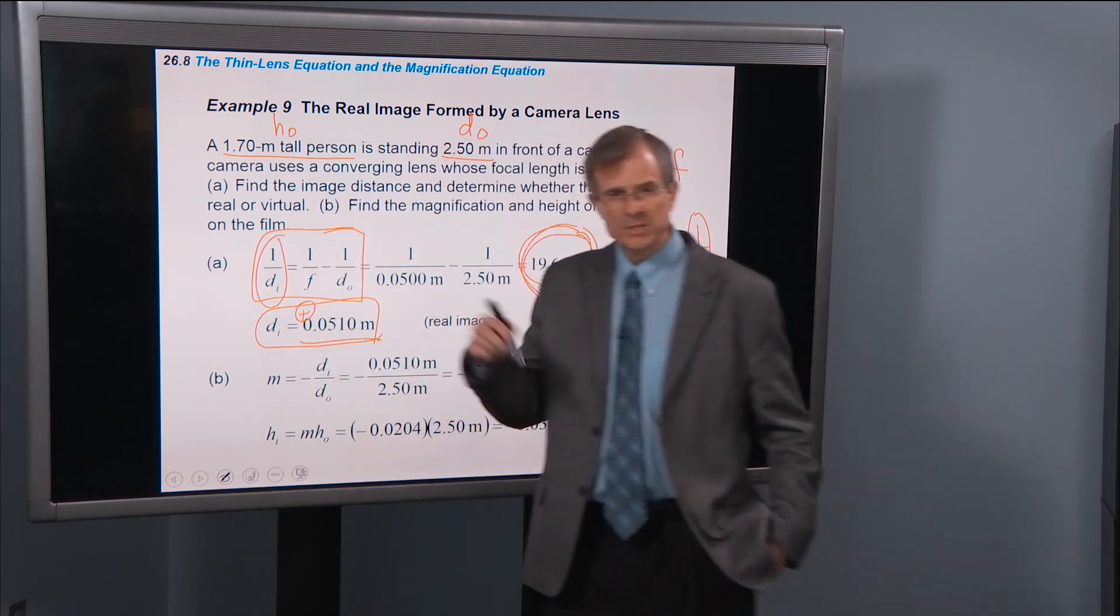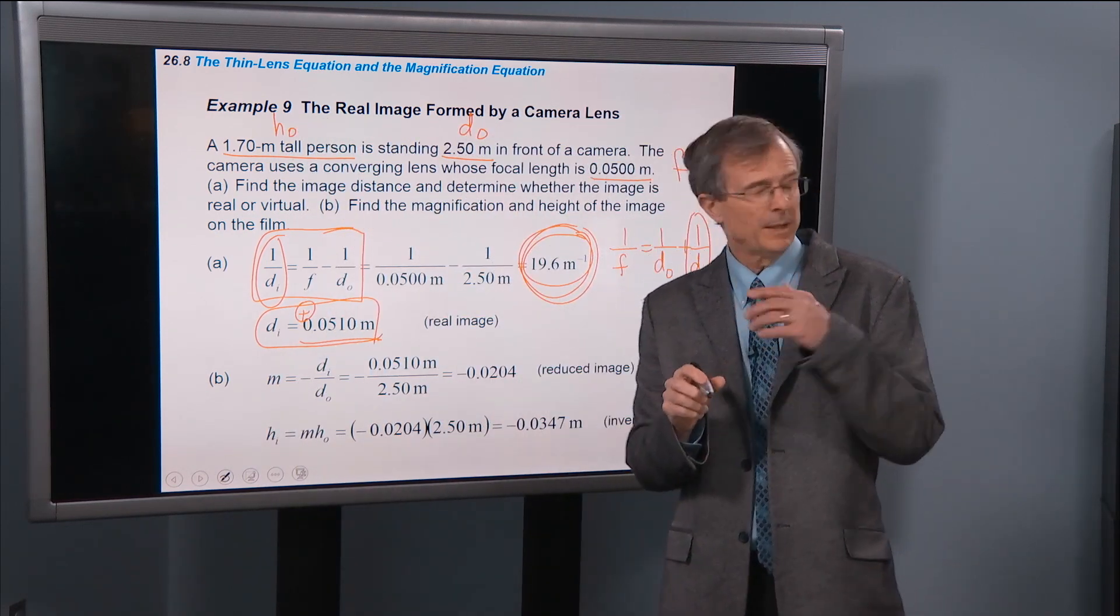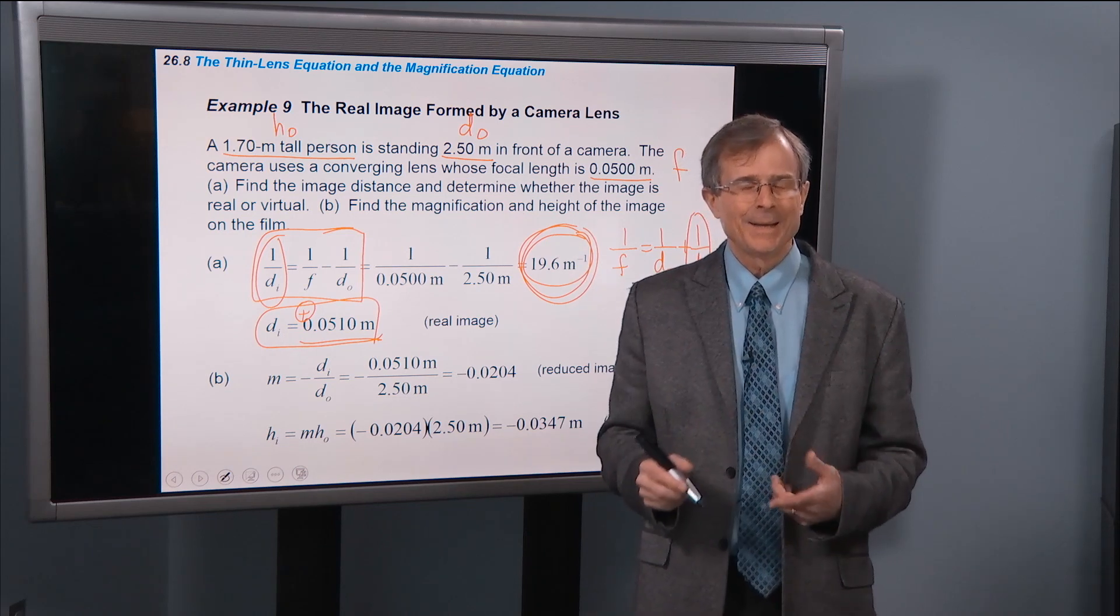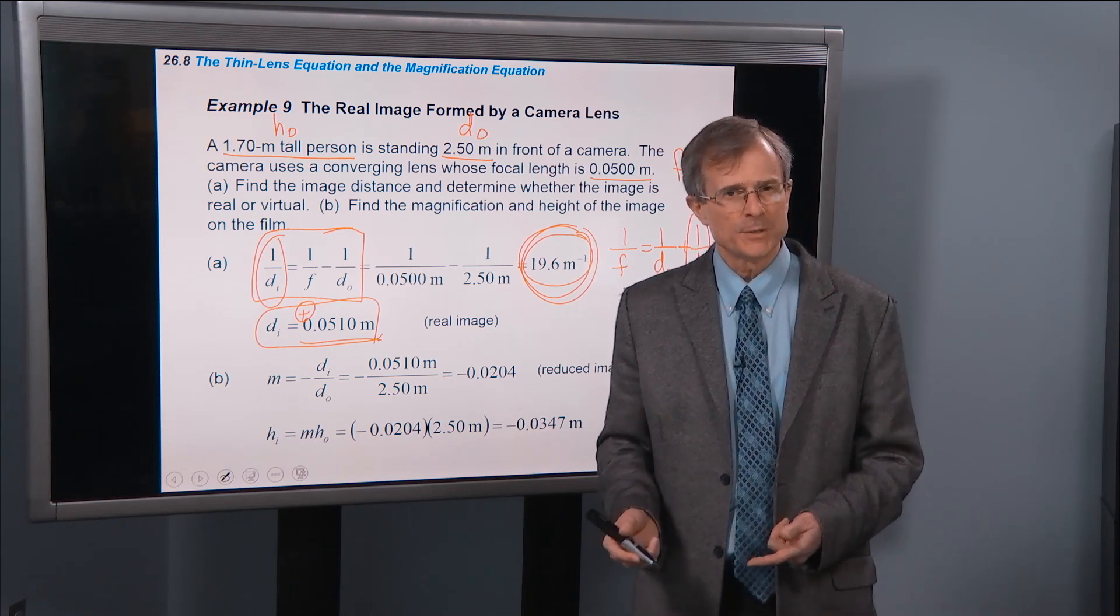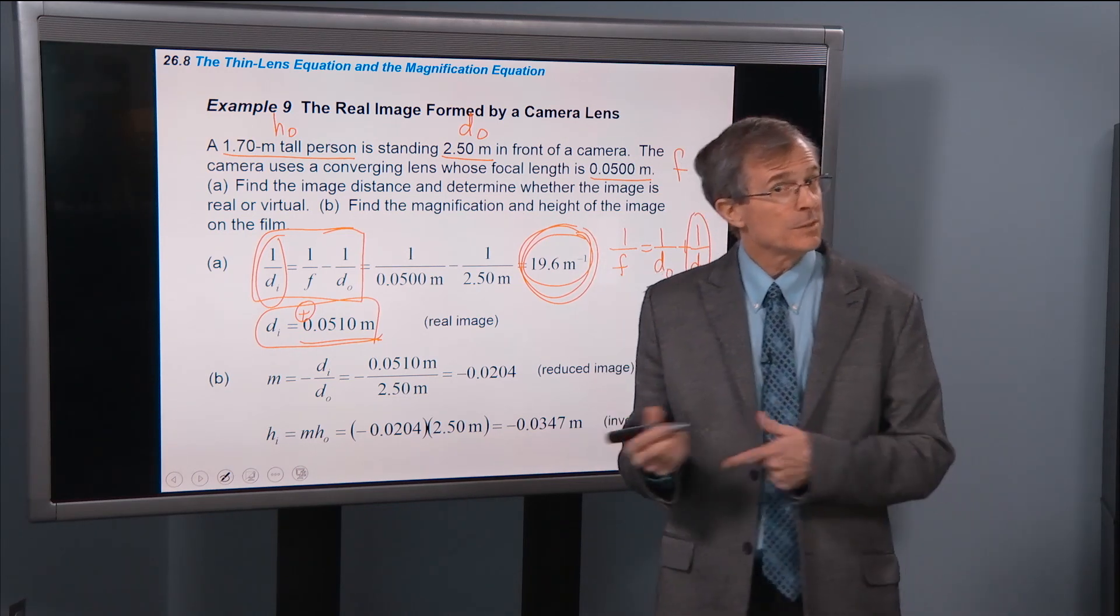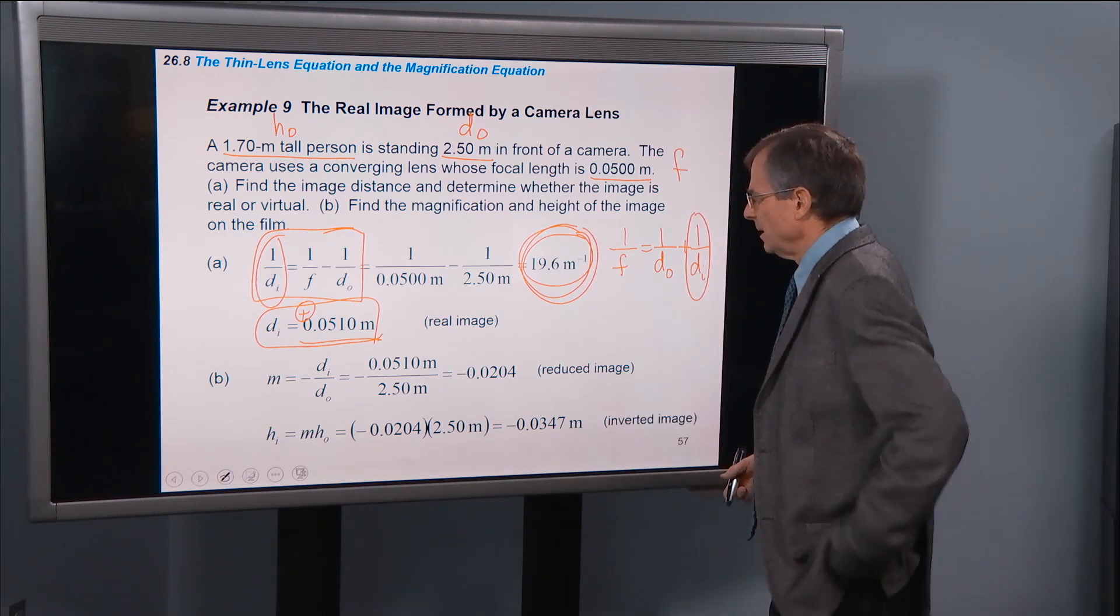Remember in the previous slide we talked about, and also in the previous chapter, if Di is positive, that means it's a real image. If Di is negative, it means it's a virtual image.